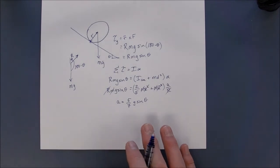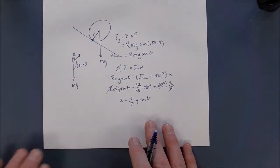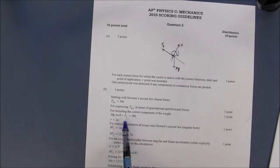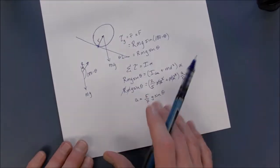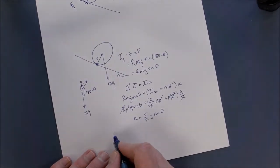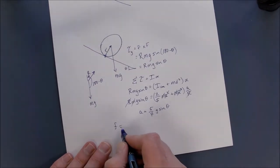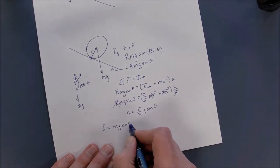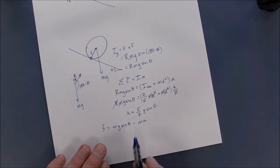When you plug it back into the force of friction equation, which is what you found early on due to Newton's second law of linear acceleration, you end up with that the force of friction is equal to mg sine theta minus ma.